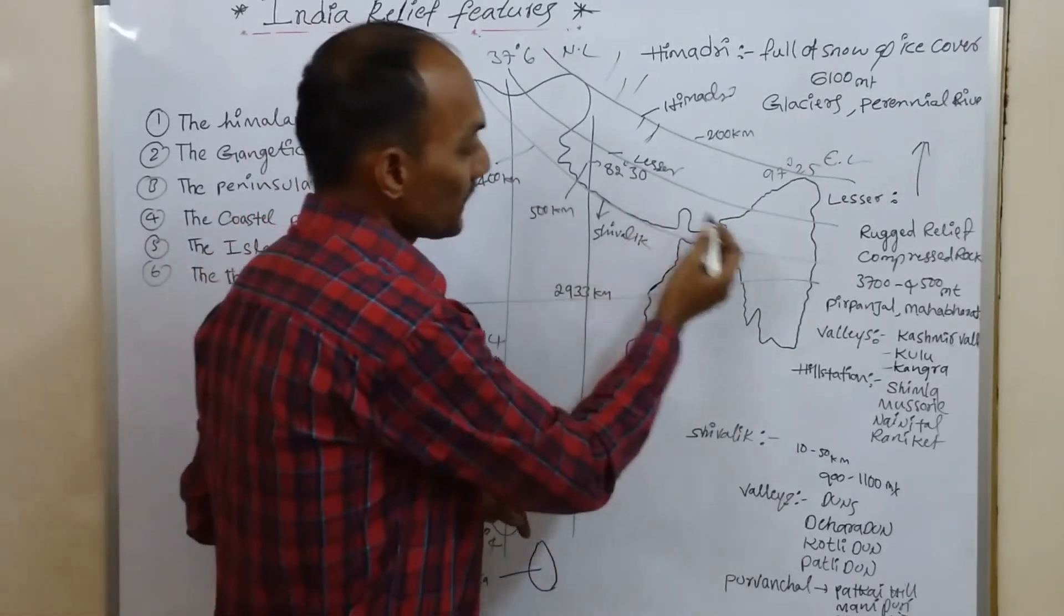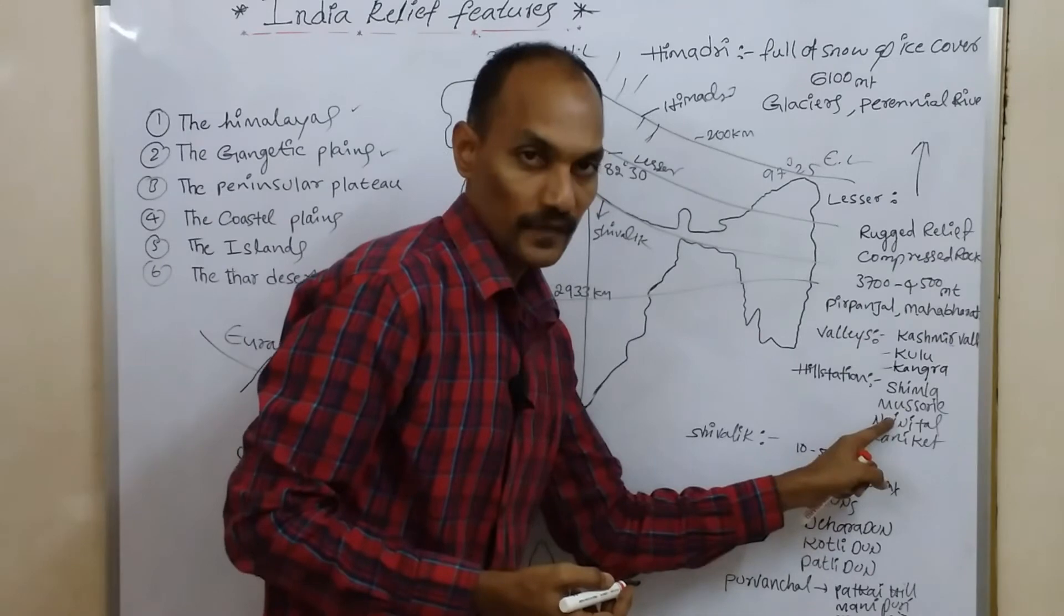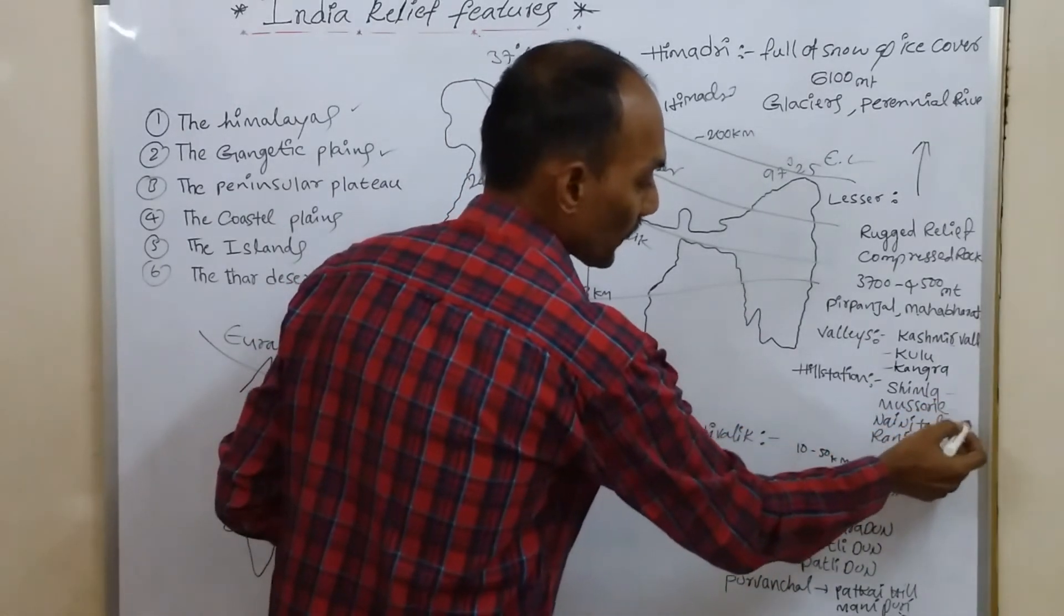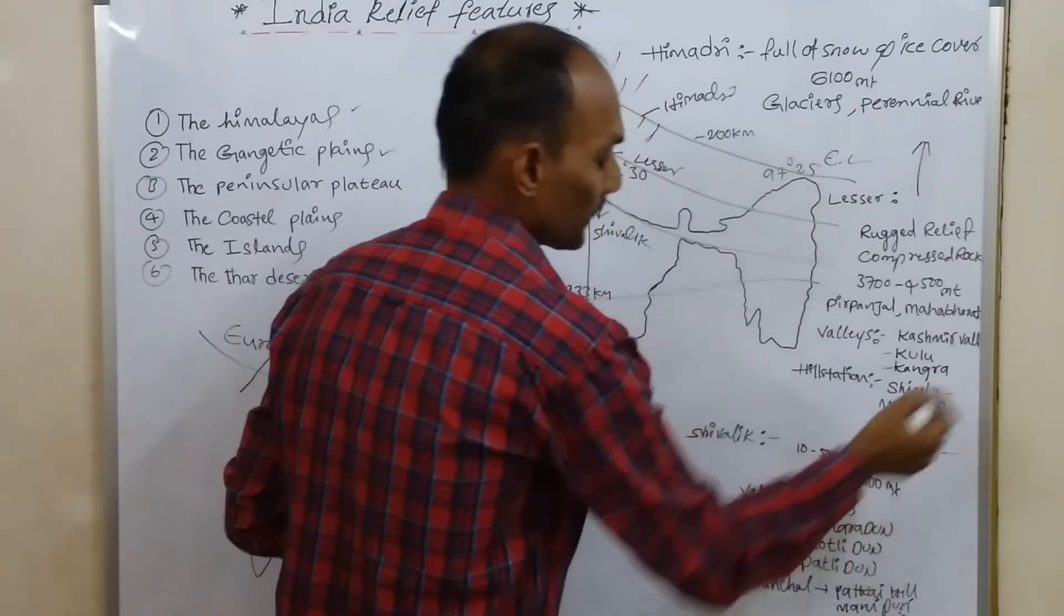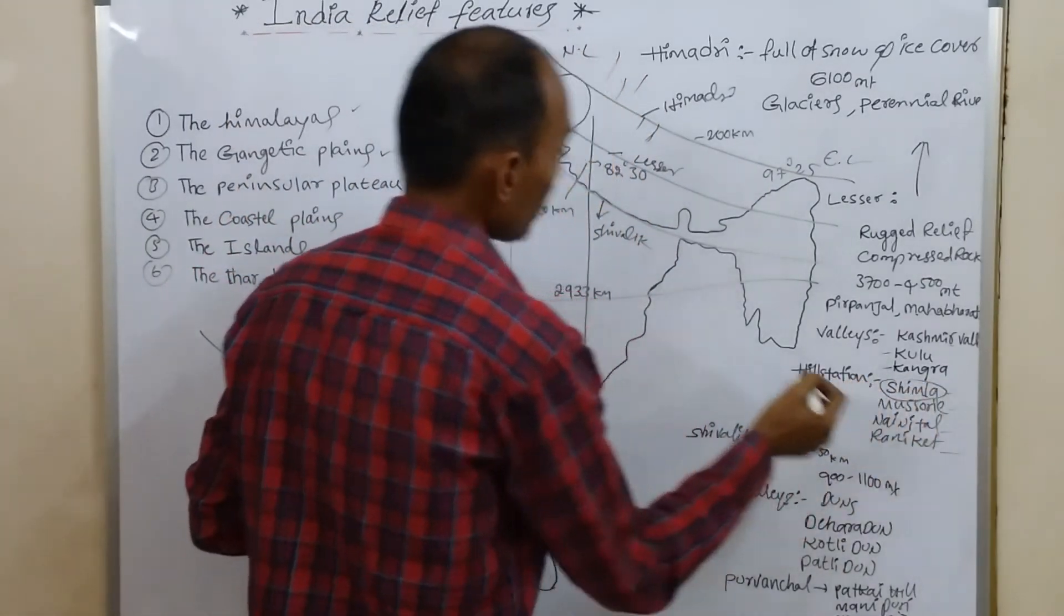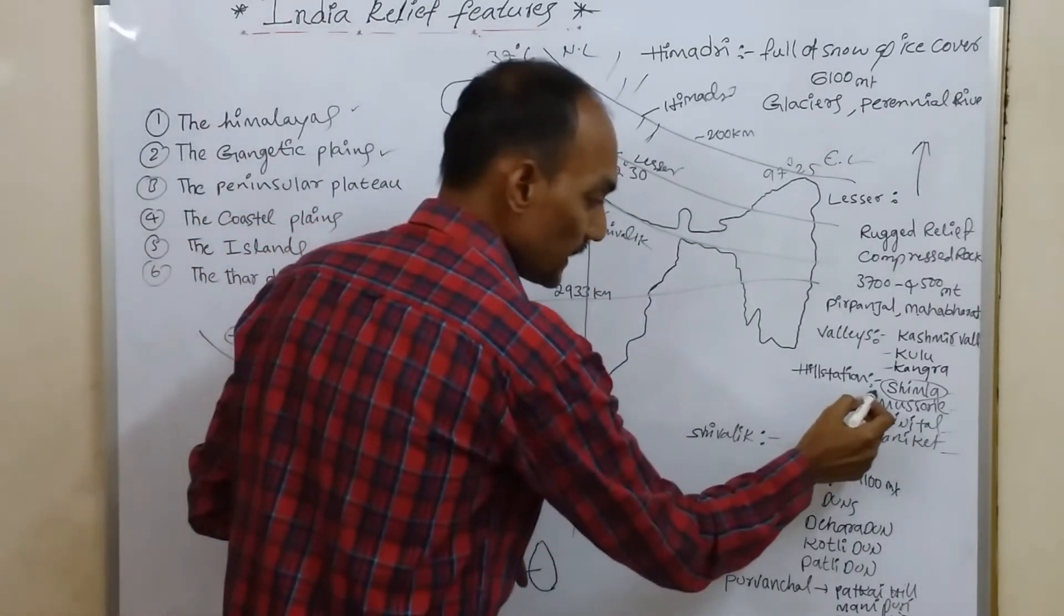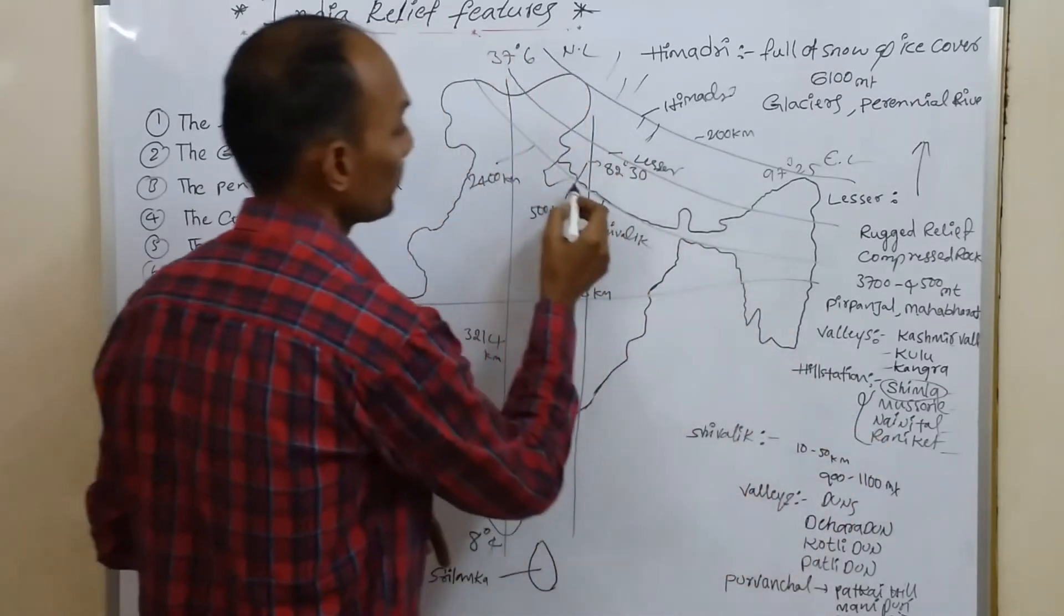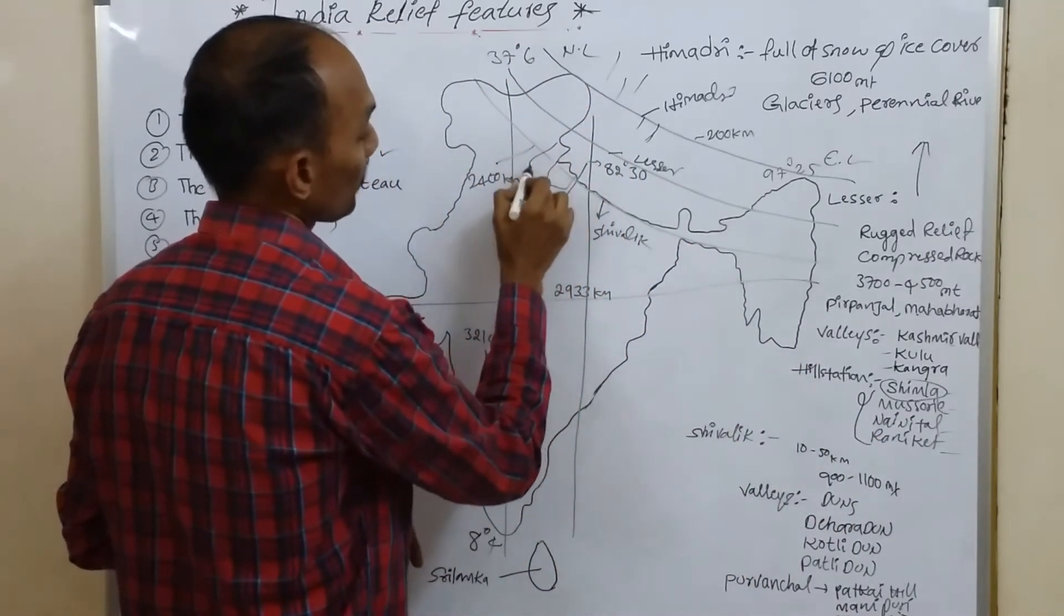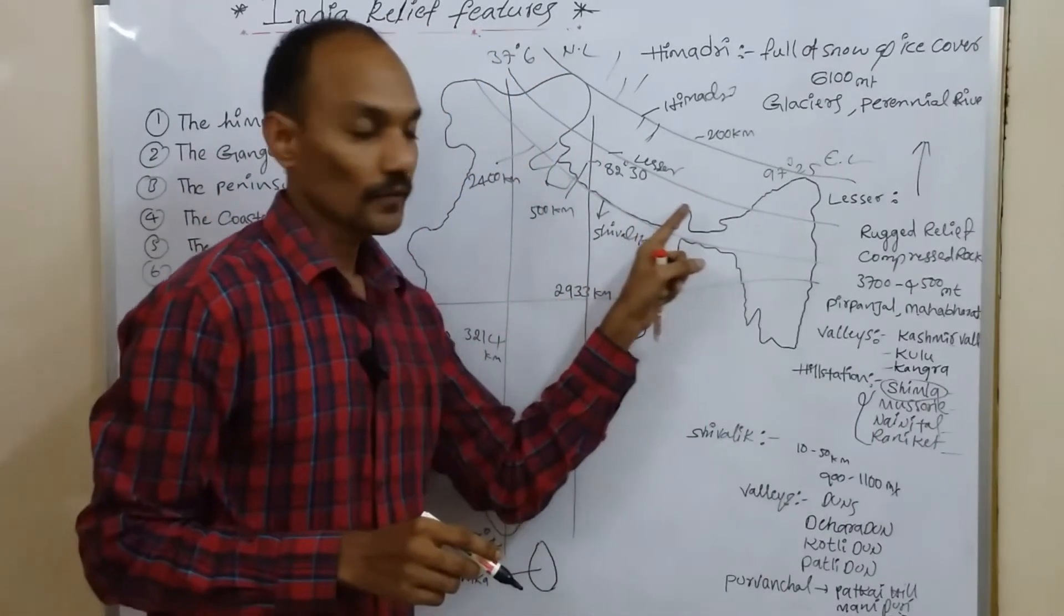The Lesser Himalaya region is famous for hill stations: Shimla, Mussoorie, Nainital and Ranikhet. Shimla is located in Himachal Pradesh. The remaining three hill stations are located in Uttarakhand. This is the Lesser Himalayas information.